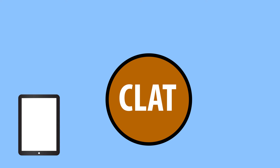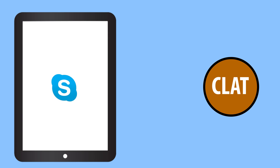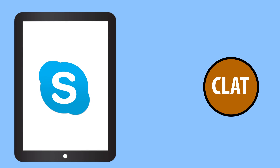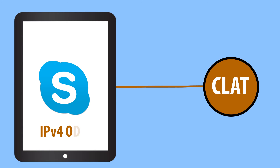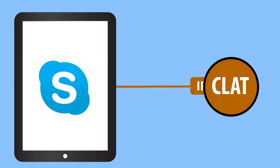Let's look at this example. The Skype client software is an application that doesn't work with IPv6. The CLAT is used to translate the Skype client's IPv4 packets into IPv6 packets.